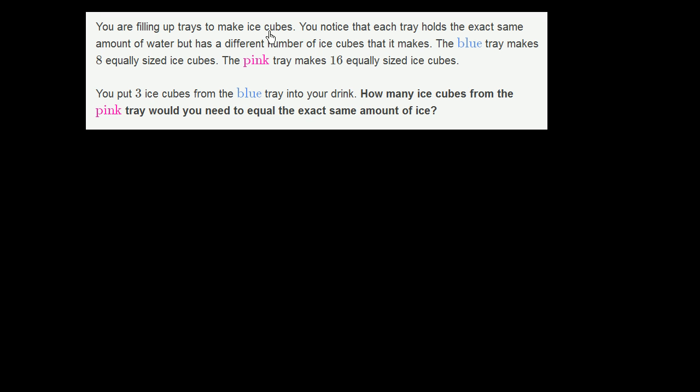You are filling up trays to make ice cubes. You notice that each tray holds the exact same amount of water but has a different number of ice cubes that it makes. The blue tray makes eight equally sized ice cubes. The pink tray makes sixteen equally sized ice cubes.